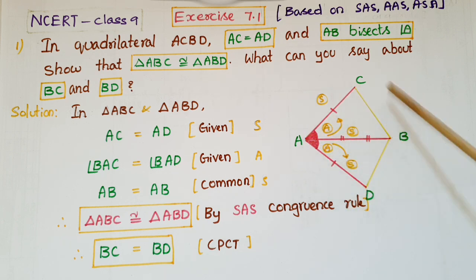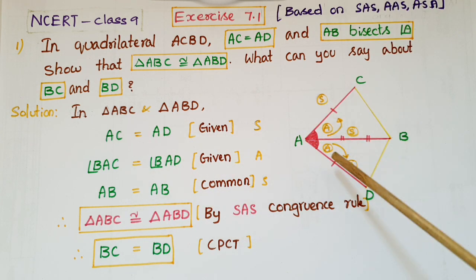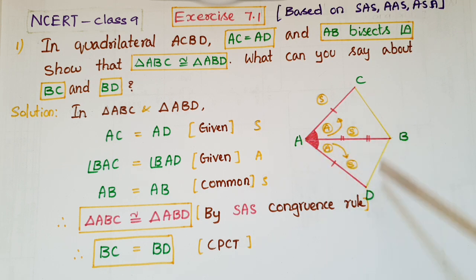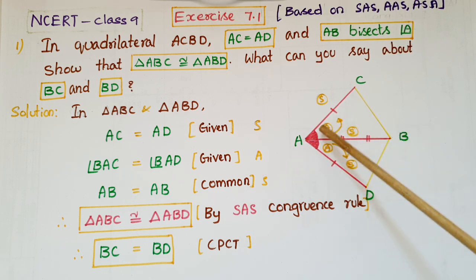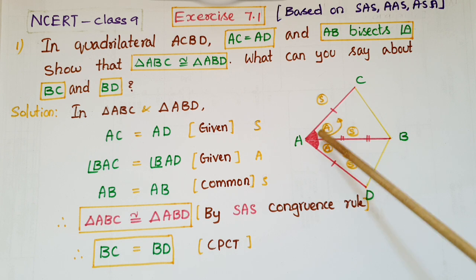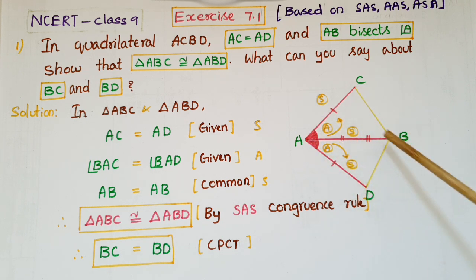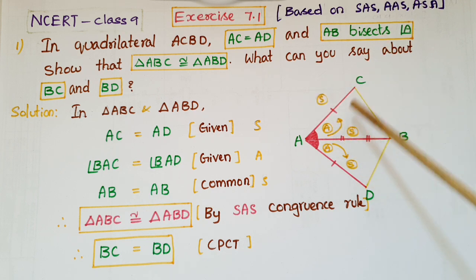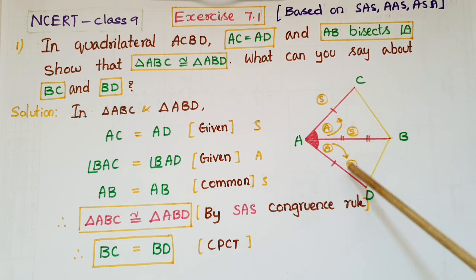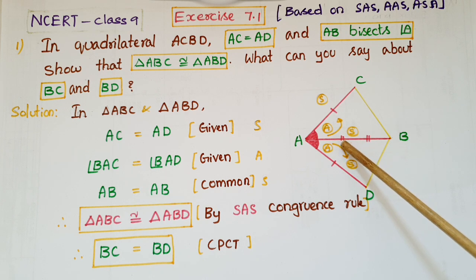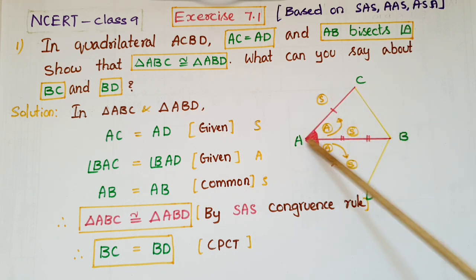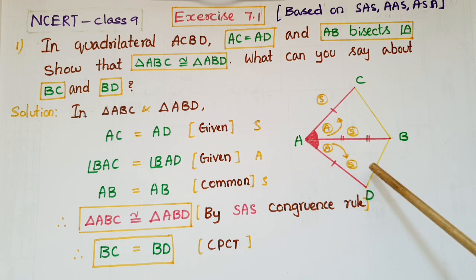In triangle ABC and triangle ABD: AC is equal to AD, this is given. Angle BAC is equal to angle BAD because AB bisects this angle, so these two angles are equal. And AB is equal to AB, the common side of these two triangles. So SAS of this triangle are equal to the corresponding side-angle-side of this triangle. Therefore, triangle ABC is congruent to triangle ABD by SAS congruence rule.